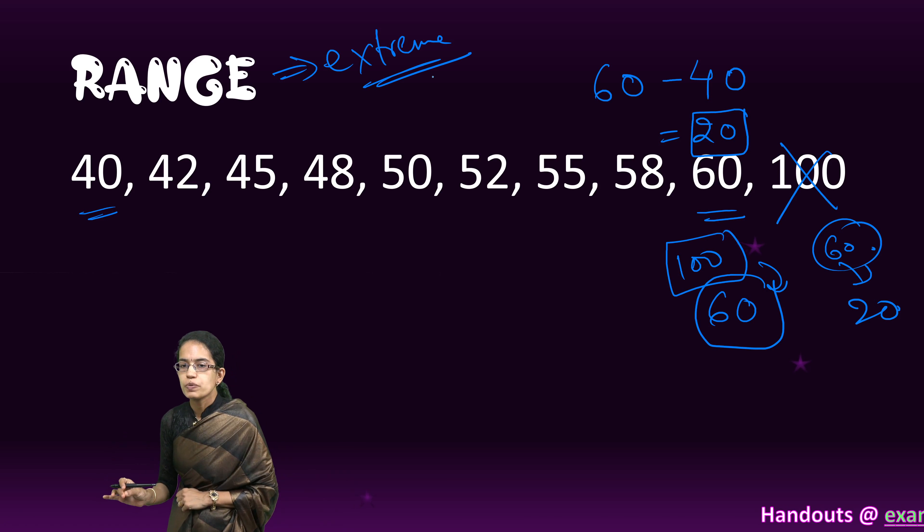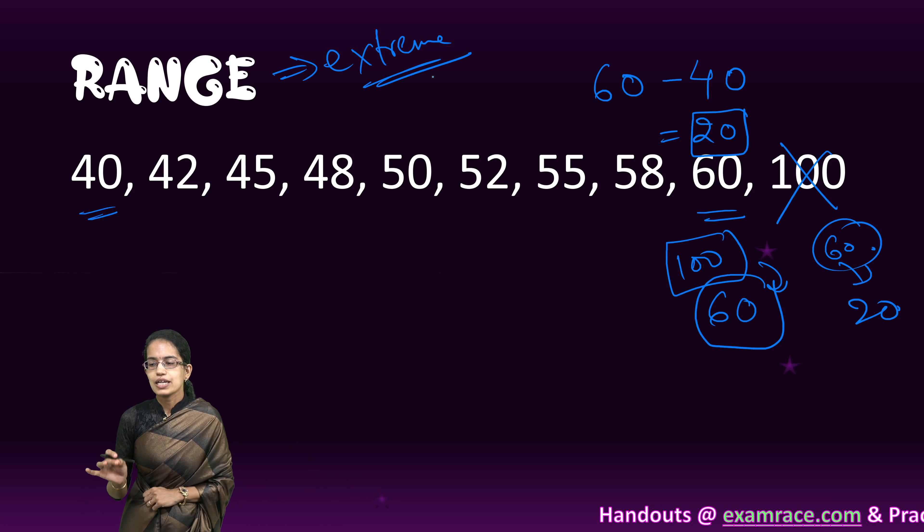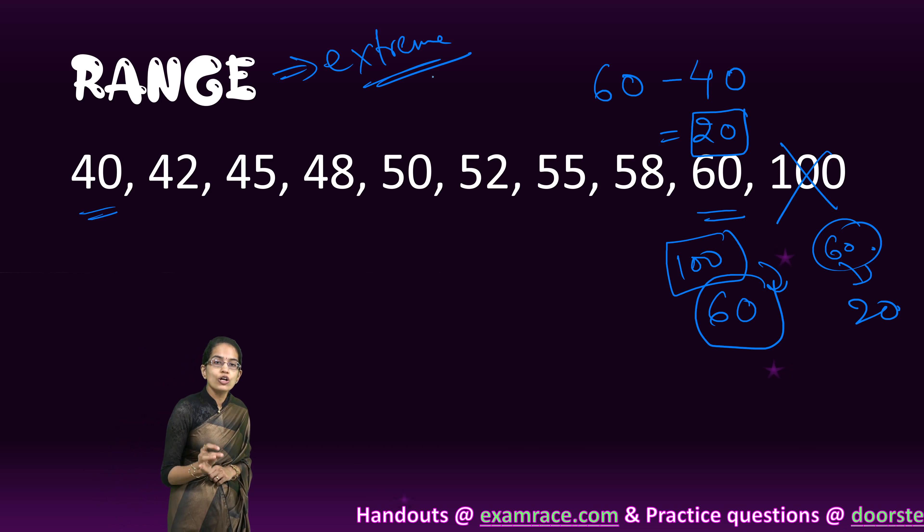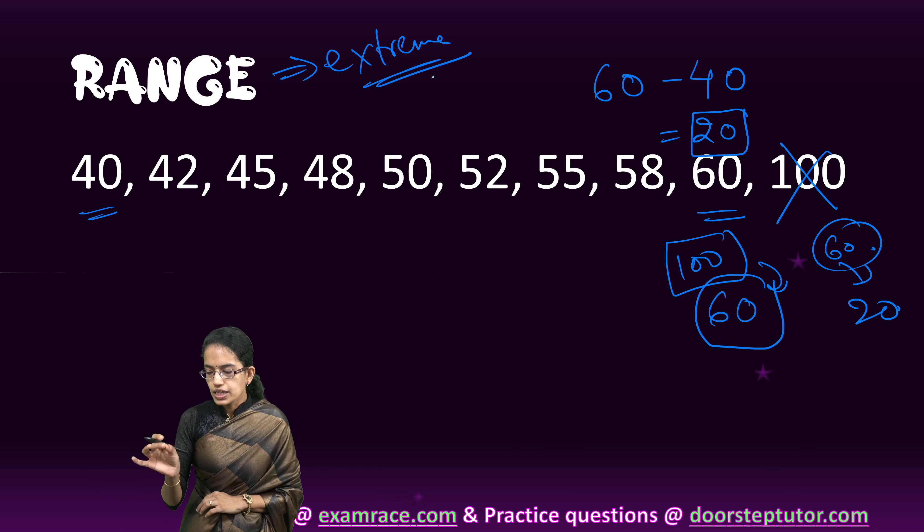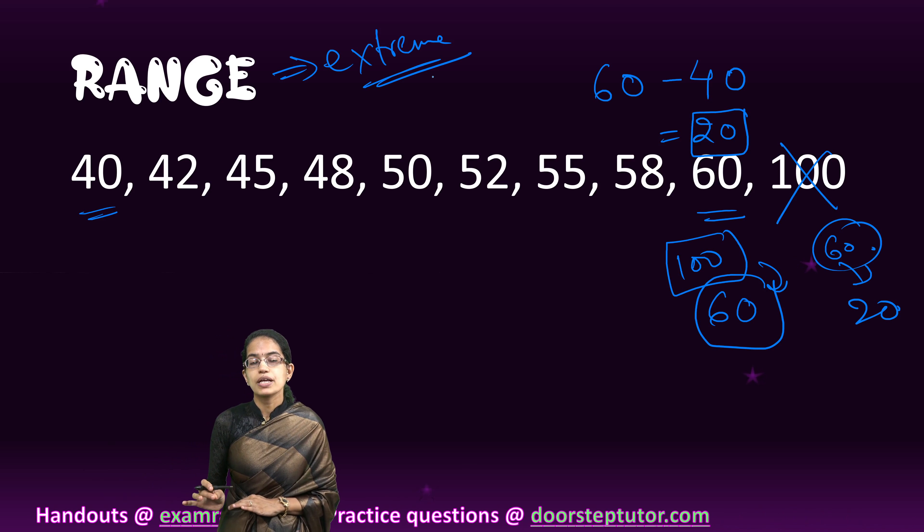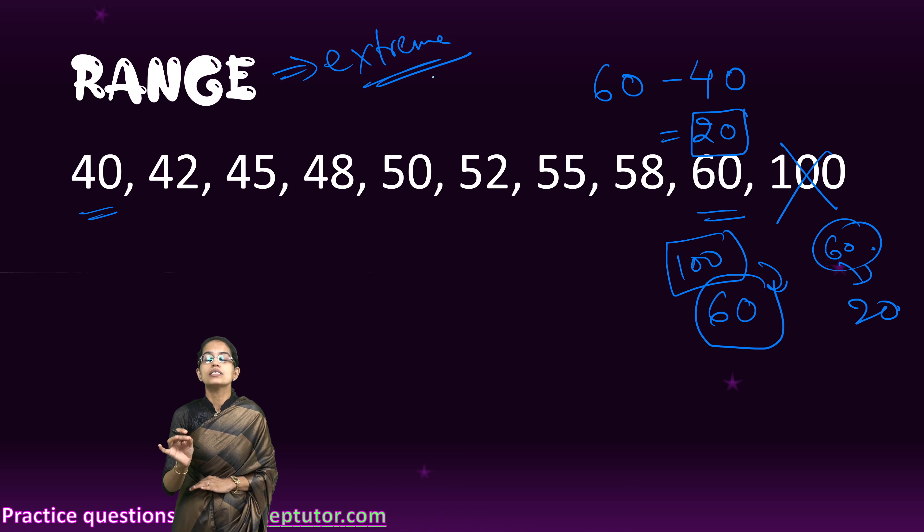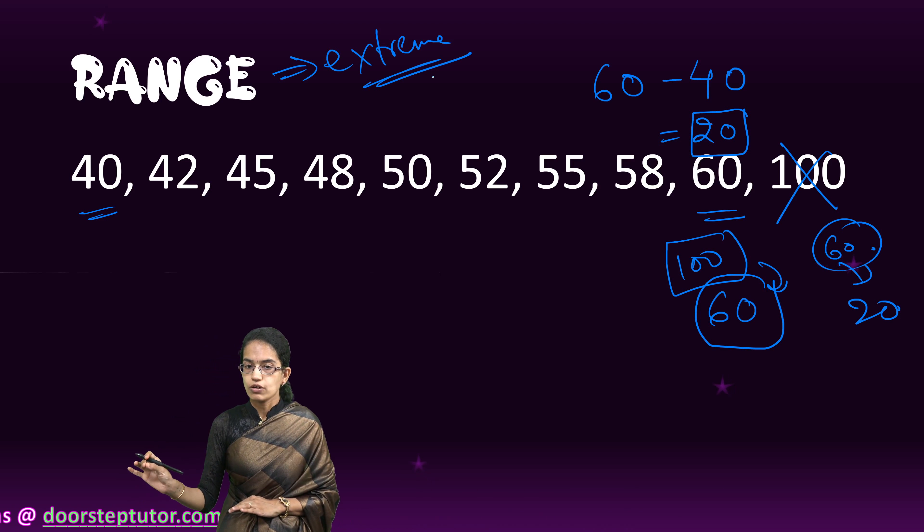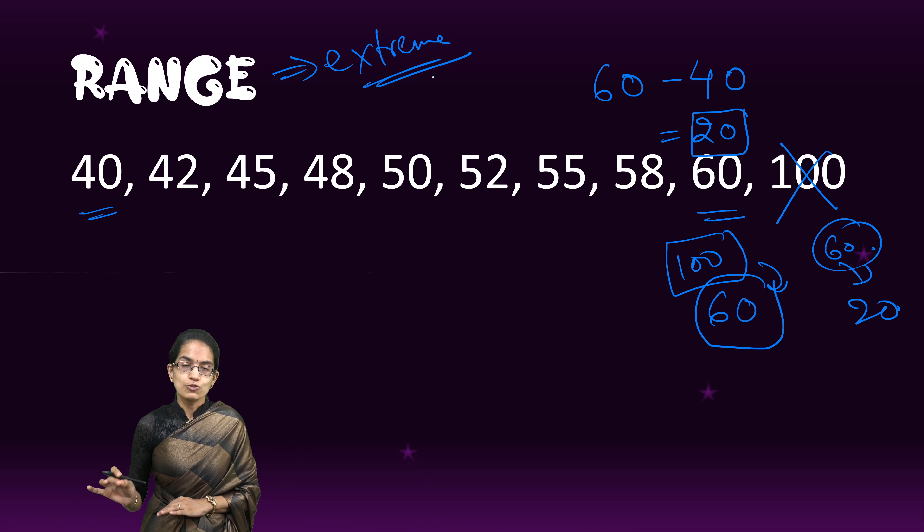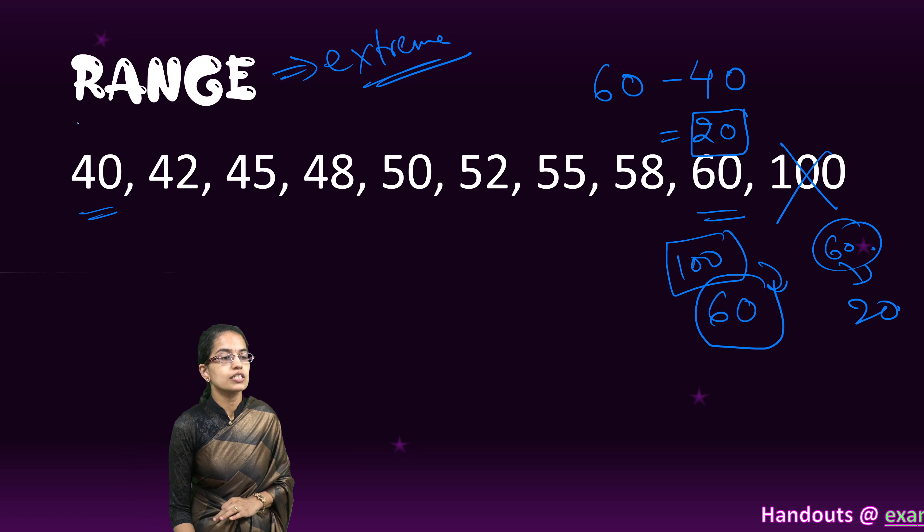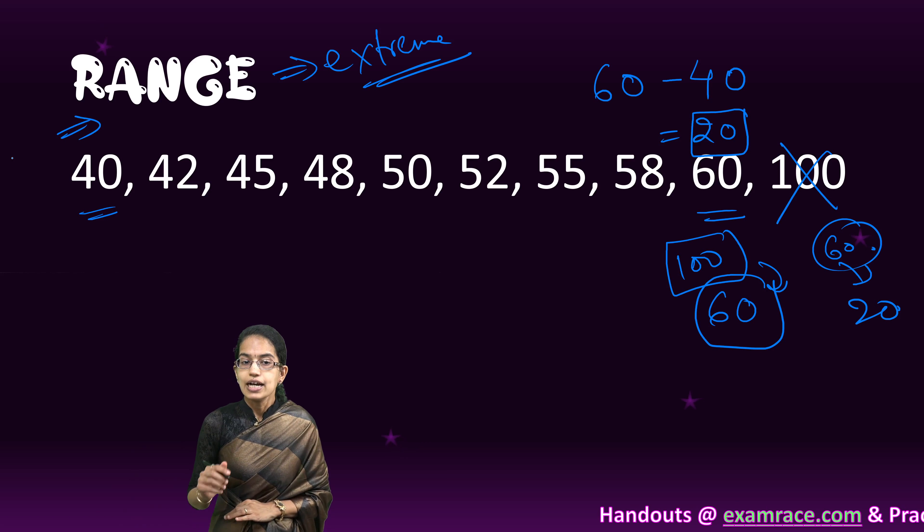Also, range is an important measure because it can become highly unstable when there is a sudden change in one of the values or one of the extreme values changes. Therefore, range is also considered as highly unstable.